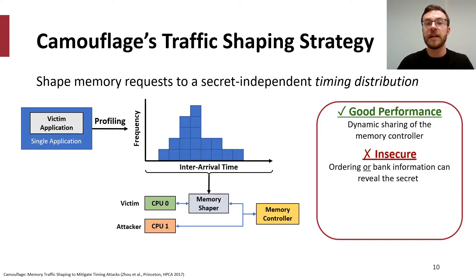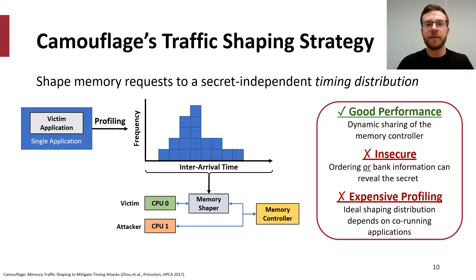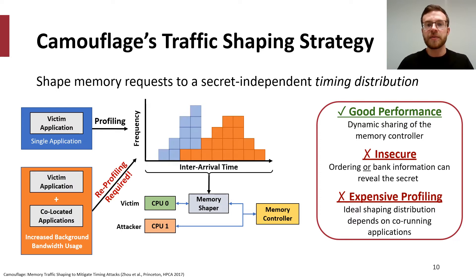Camouflage's approach, however, is insecure, since the ordering of memory requests and the request's bank information can reveal the secret. There is also the very significant problem of the profiling required by Camouflage. Camouflage relies on an inter-arrival time distribution, but in practice this distribution is dependent on co-running applications. If a different set of programs with different memory bandwidth requirements are running alongside the victim, the victim's requests may be delayed and its ideal timing distribution will also change, making it very difficult to profile victim applications since we need to know the bandwidth requirements of all co-located applications in advance.